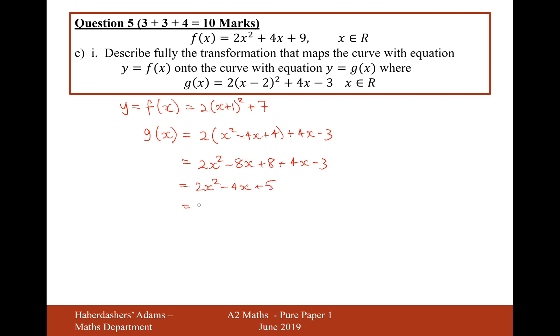Let's now complete the square on this. 2 brackets x squared minus 2x plus 5. Let's now complete the square on that. x minus 1 squared and then minus 1 plus 5. Let's expand the brackets. 2 brackets x minus 1 squared, and then it'll be minus 2 plus the 5, that'll be plus 3.